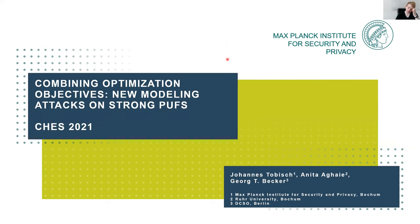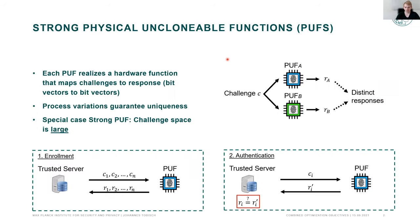Hi, my name is Jan Stobisch and I'm going to present joint work with Anita and Georg on breaking the interposed path with reliability attacks. I want to start with a quick introduction. What are physically unclonable functions? PUFs are a hardware function — you can think of them as a module embedded on an integrated circuit. These have an interface where you can apply challenges and get a response, which in this context are bit vectors.